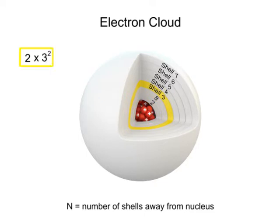For the third, 2 times 3 squared, or 2 times 9 equals 18 electrons.